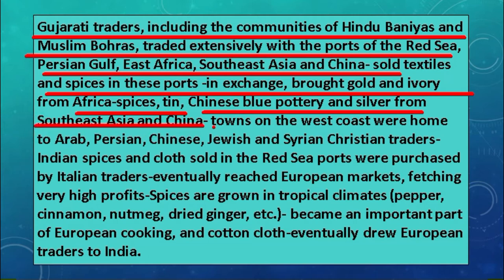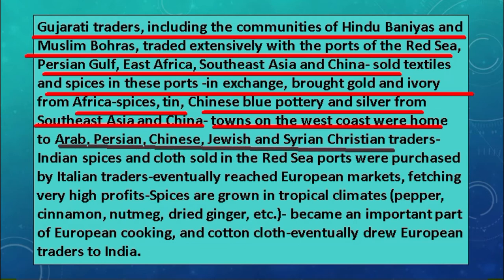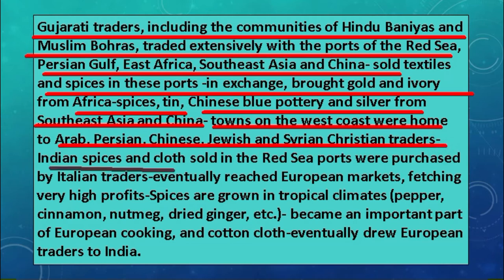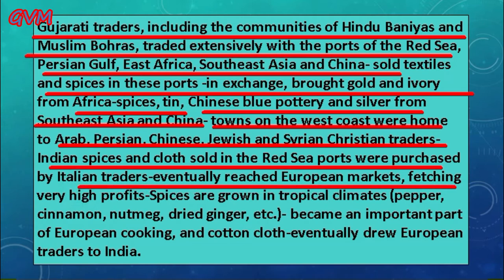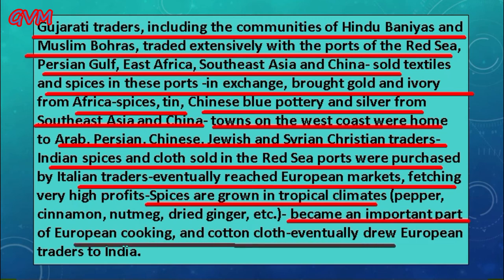From Southeast Asia and China they brought spices, tin, Chinese blue pottery, and silver. The towns on the west coast were home to Arab, Persian, Chinese, Jewish, and Syrian Christian traders. Indian spices and cloth were sold in the Red Sea ports, where they were purchased by Italian traders, and eventually many of these products reached European markets. This attracted European traders to India, and Indian spices became an important part of European cooking and clothing.